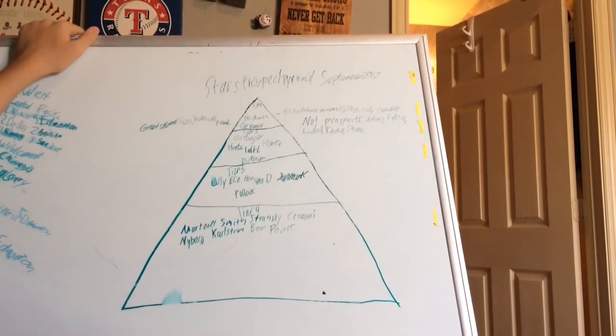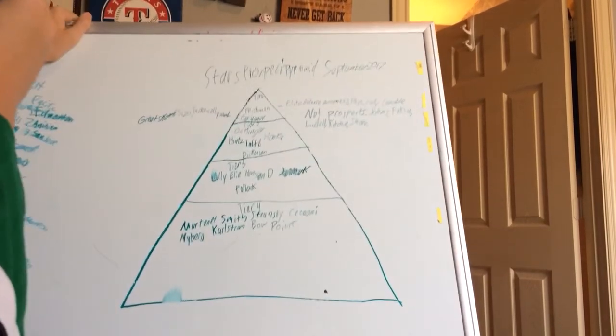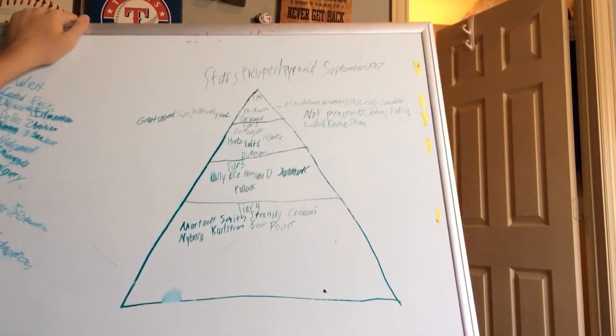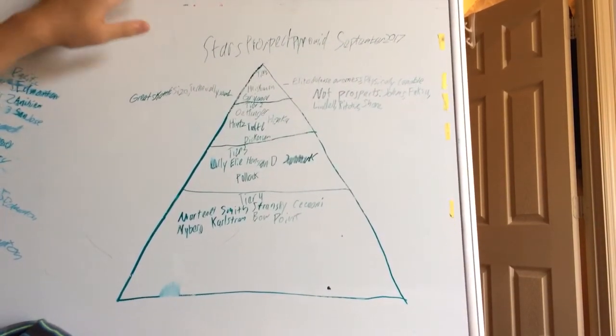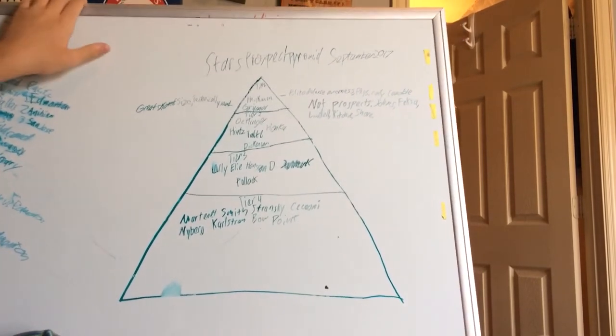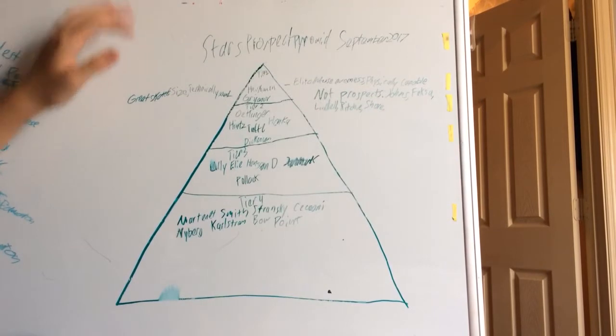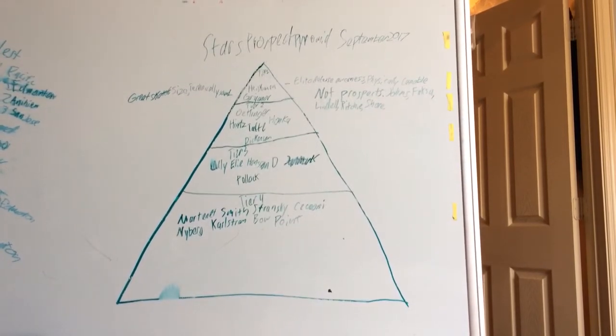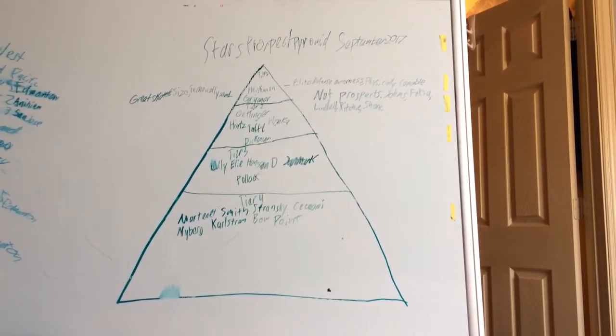Hansson, he looks to be a decent defenseman, might be a future top 6 shutdown guy. He has some offensive skill, but I think he'll probably be used in a defensive role. He probably is more of an offensive guy, but I think he needs to be a defensive guy for him to be put in the lineup.